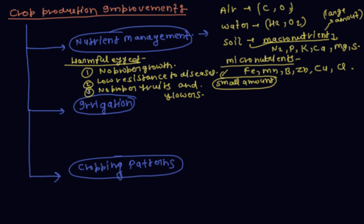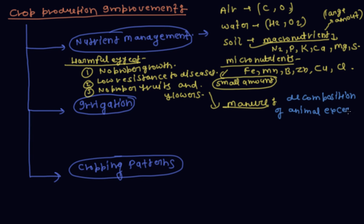Now manure and fertilizers. In nutrient management, let's discuss manure. Manure is defined as the decomposition of animal and plant waste. Manure mainly contains organic matter and also some nutrients in a small amount.